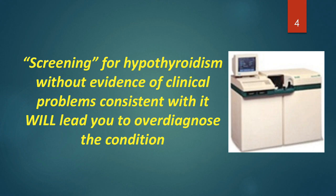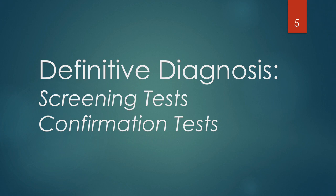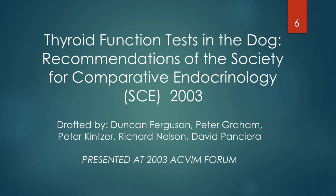We're going to break down the types of tests into those that you might use to screen an animal for hypothyroidism — to try to rule it out — and those that you would use to confirm the diagnosis once you have an initial suspicious finding. We're going to rely on many of the observations made by a group about 15 or 16 years ago associated with the Society for Comparative Endocrinology, which came up with recommendations based upon the tests at that time. Many of those tests exist today and much of the data has been reconfirming the kinds of observations made by this group.